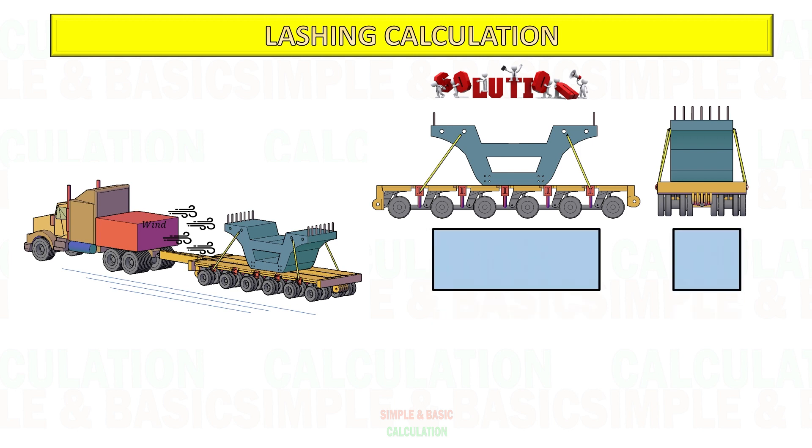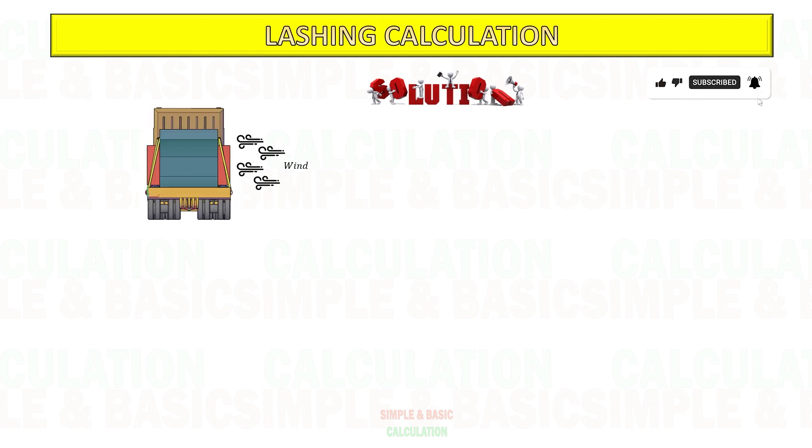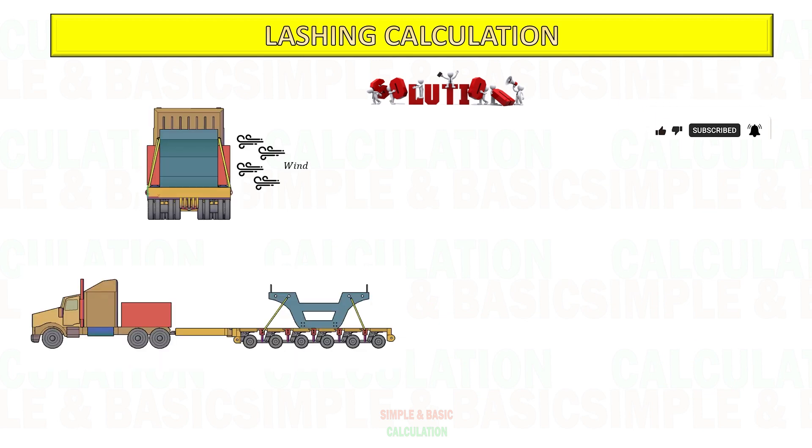Calculate the surface area exposed to the wind during transportation at longitudinal and transverse direction. For easy calculation, I consider the surface area of the cargo to be rectangular shape.